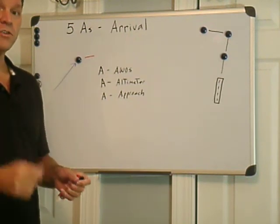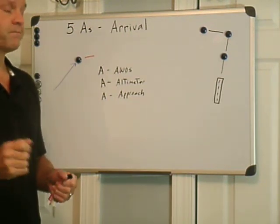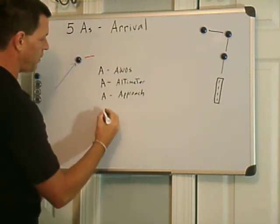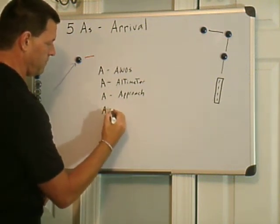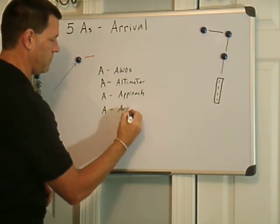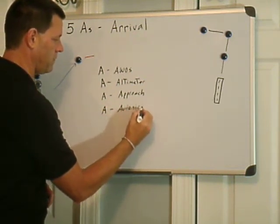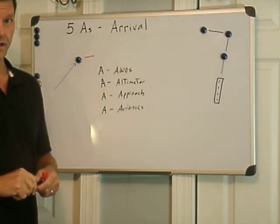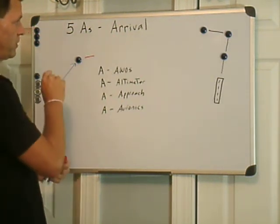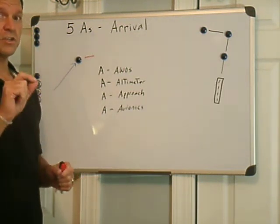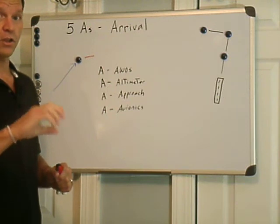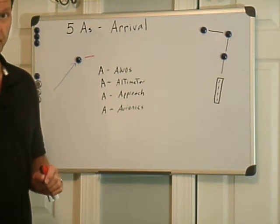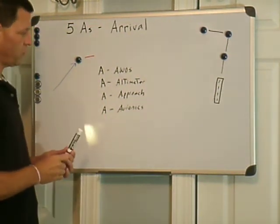We've selected our approach. Now we're going to look at the approach requirements, the courses to be flown, the fixes. We're going to brief ourselves on the approach, and we're going to set up our avionics. In this case, we've decided that we're going to fly the GPS-17 approach into the Dare County Airport. So what we're going to do is, as we're navigating, we're going to load the approach. We're going to select the initial approach fix, and we're going to load that into the active flight plan. And we'll cover that a little bit in the using the KLN-94 GPS video in a second.